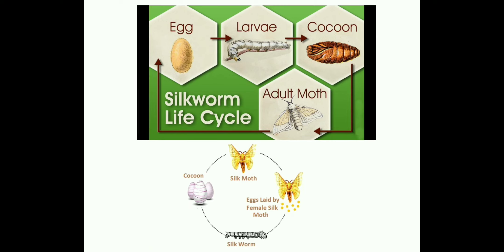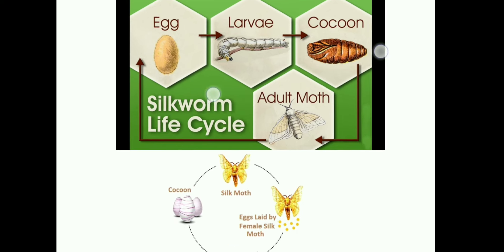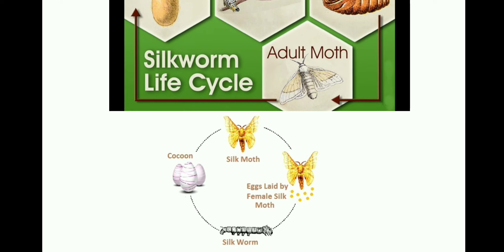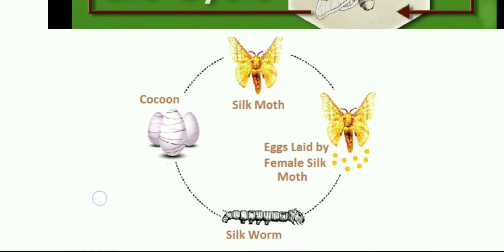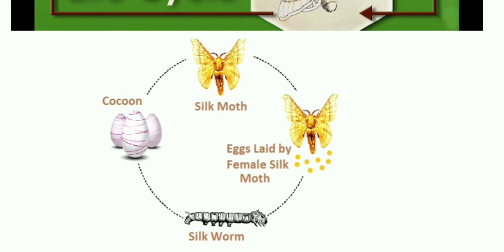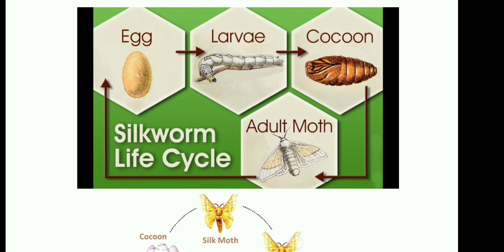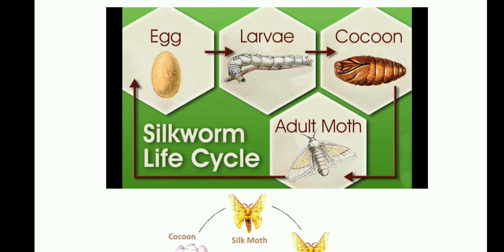All four stages can be summarized in the life cycle of the silkworm: egg changes into larva, larva changes into cocoon, and cocoon changes into adult moth, which then lays eggs again. The diagram of the life cycle of the silk moth is very important, so children, please practice the diagram.